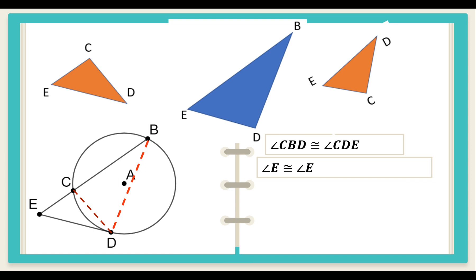So let us rotate the orange triangle. Now it is easier to look at the related parts of these two triangles. Let's mark angle CBD and angle CDE, which we have stated to be congruent — angle B and angle D are those two congruent angles. Likewise, let us mark angle E on the blue triangle and angle E on the orange triangle.